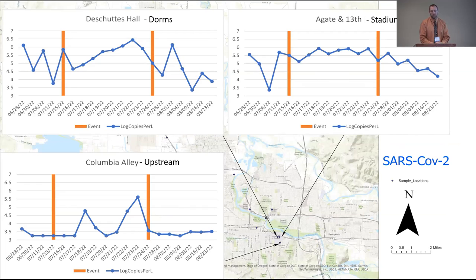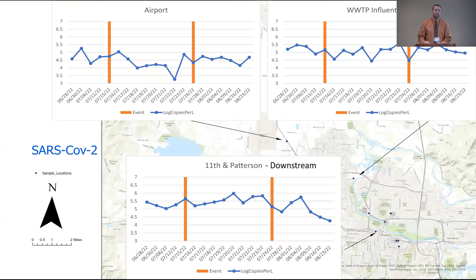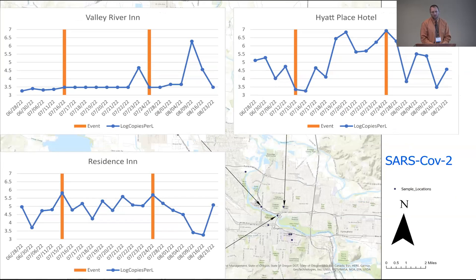For SARS-CoV-2, coronavirus was somewhat variable overall, but we definitely saw major spikes in the upstream surrounding community during the event, and the dorms saw a major increase in coronavirus near the end. The airport appeared to go down during the event and bounce back afterwards. The treatment plant influent was relatively stable with expected ups and downs but no large increase, and the downstream actually went down after the event, maintaining a relatively stable level during it. Among hotels, the Hyatt again saw the biggest increase during the track and field event; the hotel furthest from the university saw very little; and the Residence Inn was variable but averaged about the same.